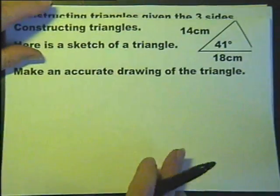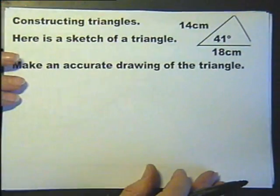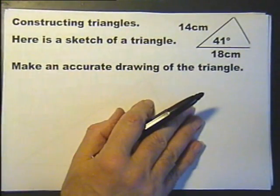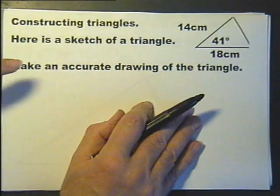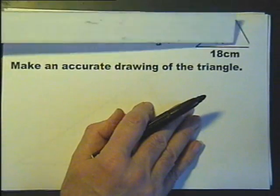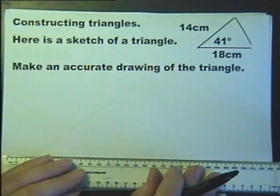And let's move on to our second construction. Here's the sketch of a triangle, it's 18 by 14 with a 41 degree angle in there. Make an accurate drawing of this triangle. So we draw a line 18 centimeters first.